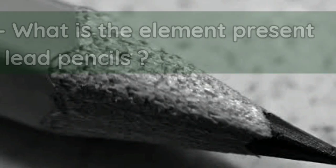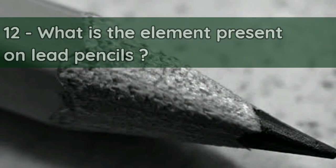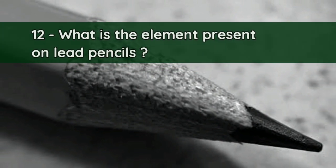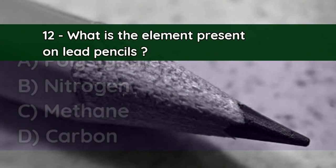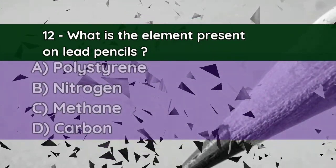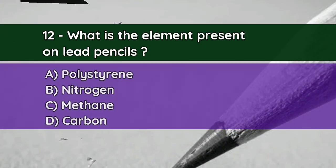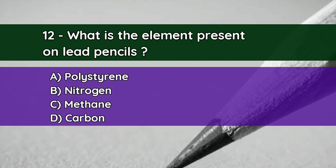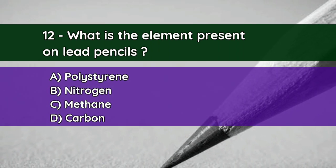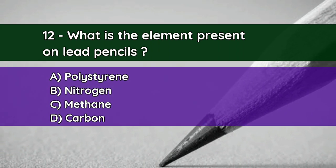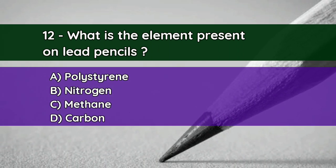Question number twelve: What is the element present in lead pencils? A. Polystyrene, B. Nitrogen, C. Methane, D. Carbon. And the correct answer is D — Carbon.